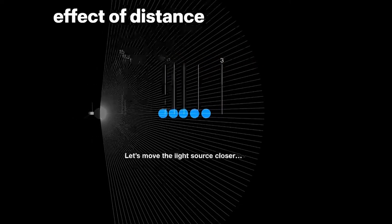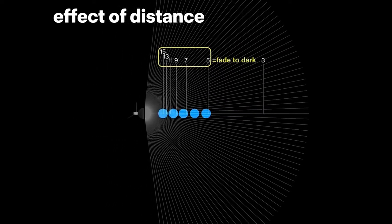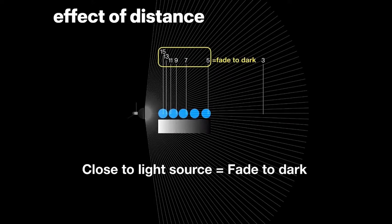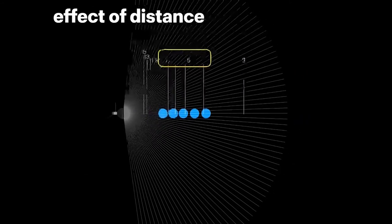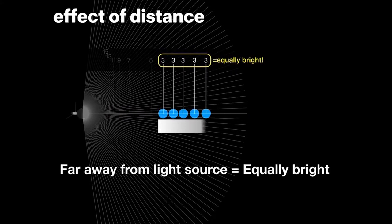What happens if we move it closer? The first ball is hit by 15 rays, the next 13, then 11, 9, 7, 5 — the balls will fade to dark. The closer we are to the light source, the quicker the falloff. But move them back, and they are all equally bright. The further away you have your light source, the more even the light will be over a distance.